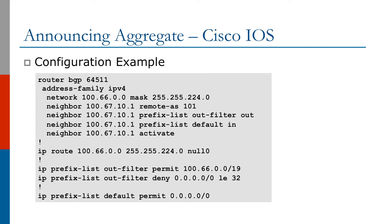As you can see, the router BGP statement denotes that the ISP has been assigned an ASN of 64.5.11. The aggregate is announced using the network statement: network 100.66.0.0 mask 255.255.224.0. Remember that a pull-up route must be configured to announce the aggregate, or the route must be present in the routing table. An outbound filter called out-filter is applied to its neighbor 100.67.10.1 with an ASN of 101, which only permits the prefix 100.66.0.0/19 to be announced and denies everything else.